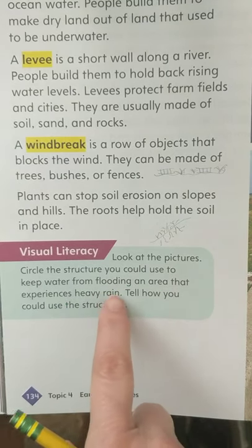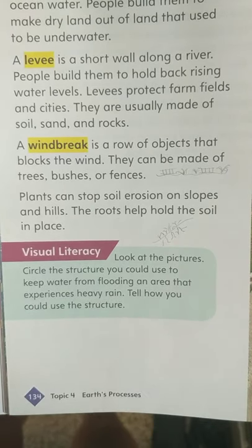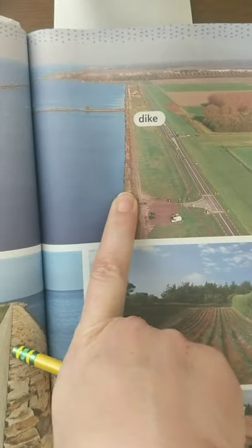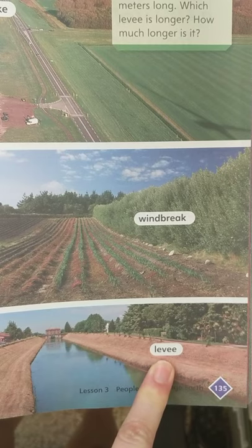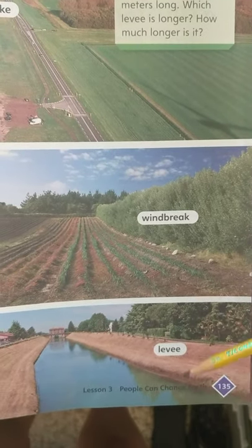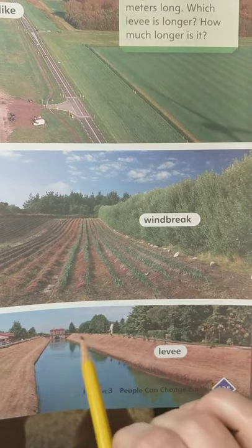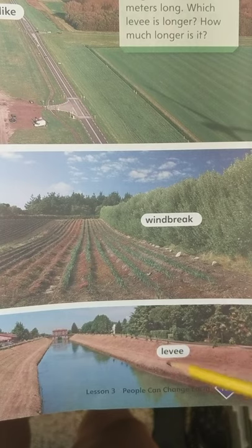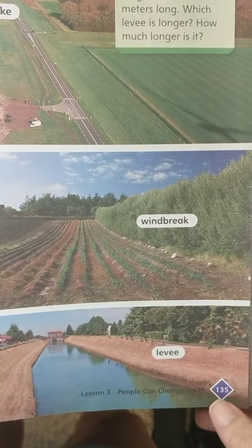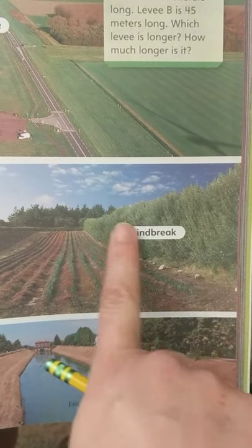Look at the pictures — circle the structure you could use to keep water from flooding an area that experiences heavy rain. Tell how you could use the structure. Would you use a dike, a windbreak, or a levee to help with heavy rain? You should have chosen levee — the levee prevents that flooding from coming over. We can see that if it rains a lot, the river can overflow and flood, so the levee was the best choice.